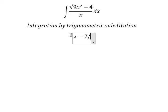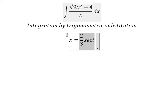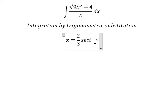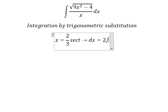We put x equal to 2 over 3 secant of t. If we substitute this in, we have 4 over 9 secant squared of t. The 9s cancel and the 4s cancel, and we can do factorization: secant squared t minus 1, which we change to tangent squared t. Taking the square root, that becomes tangent t.